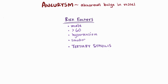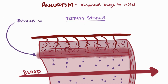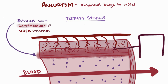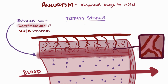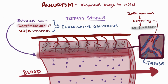In tertiary syphilis, the vasa vasorum are affected as syphilis causes inflammation in the tunica intima of the vasa vasorum, ultimately leading to a narrower lumen and restricted blood flow to the walls of the thoracic aorta, causing atrophy. This vasa vasorum inflammation is called endarteritis obliterans. In tertiary syphilis, the inflammation causes fibrosis and scarring on the walls, creating a distinctive tree bark-like texture.